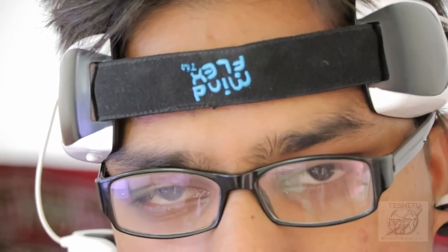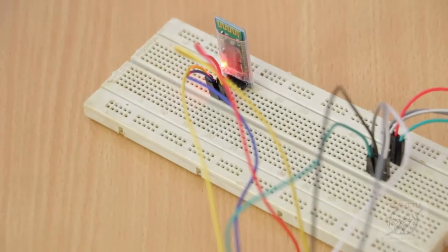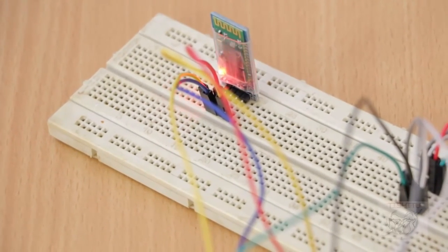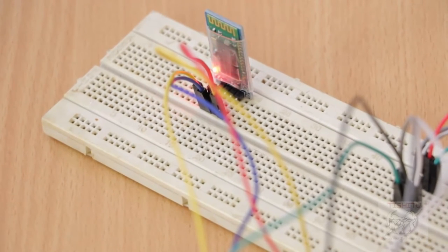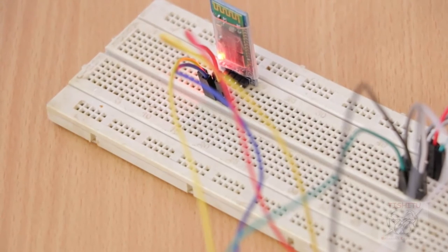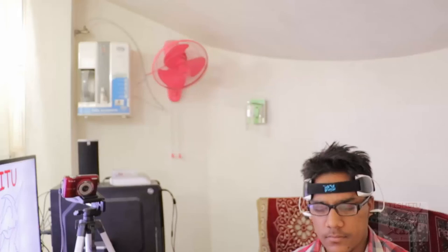To connect the Bluetooth, we have to switch on the brain wave sensor. Now I'm switching that sensor. You can see that red LED is blinking and going to stabilize. Now you can see the red LED is stabilized, which means that the sensor is connected.